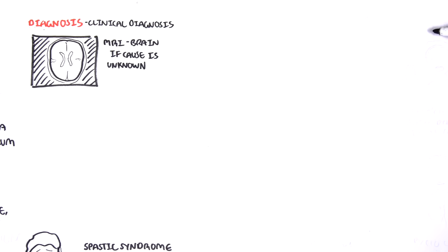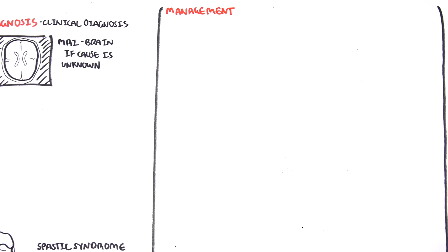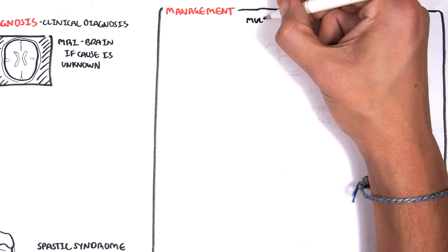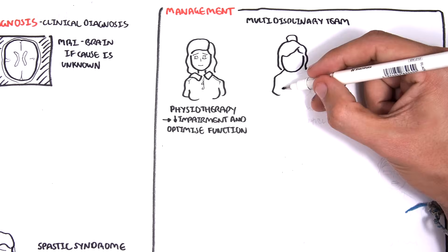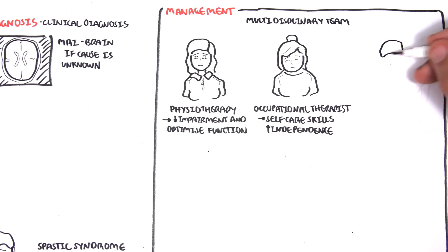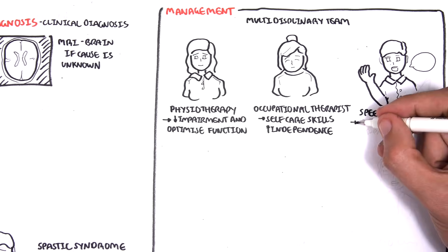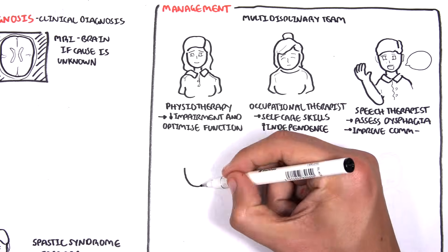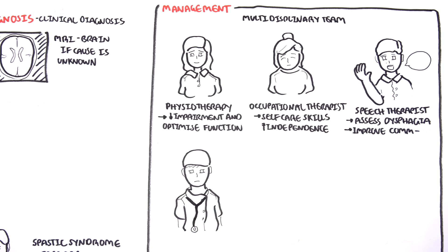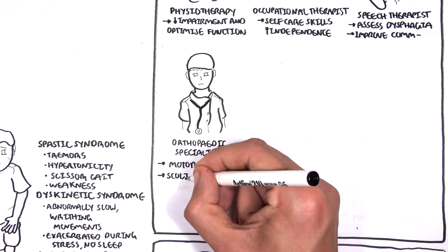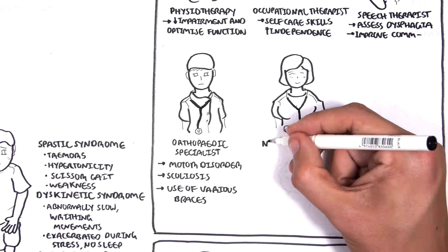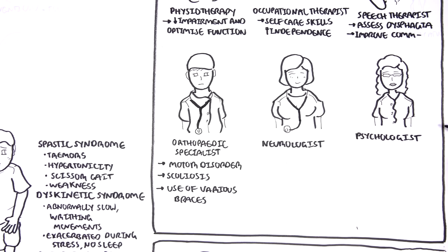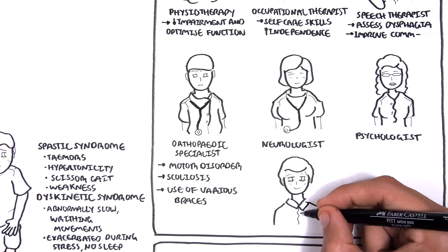The management of cerebral palsy involves a multidisciplinary team, because there are many complications. The team includes a physiotherapist to help reduce impairment and optimise function; an occupational therapist for self-care skills and to increase independence; a speech therapist to assess for dysphagia and improve communication; an orthopaedic specialist for motor problems, scoliosis of the spine, and the use of various braces; a neurologist; and a psychologist, who is important for mental health. The general practitioner or family physician probably coordinates the whole team.